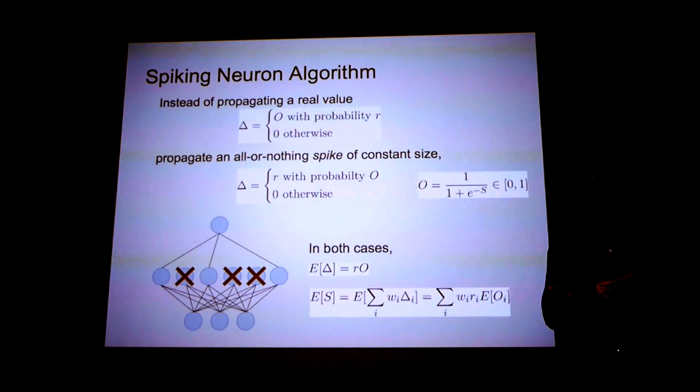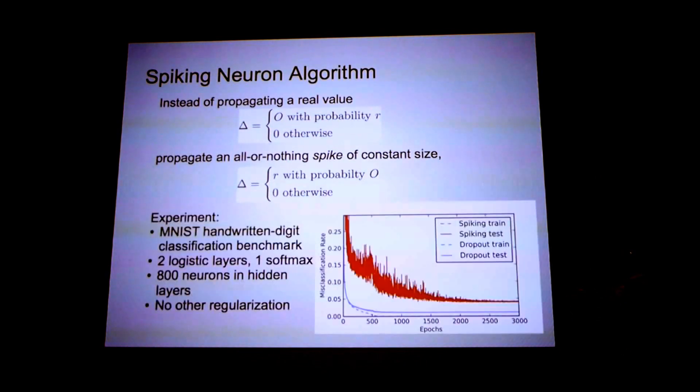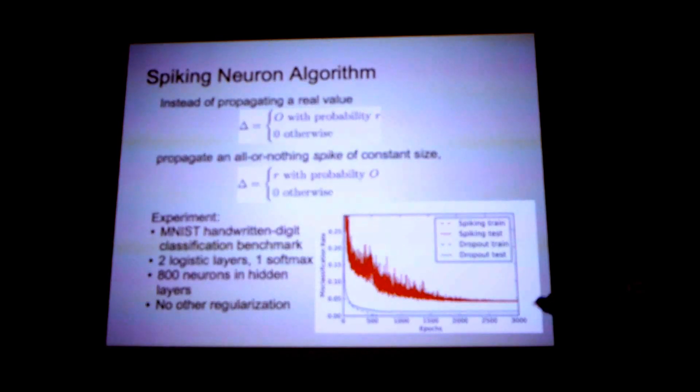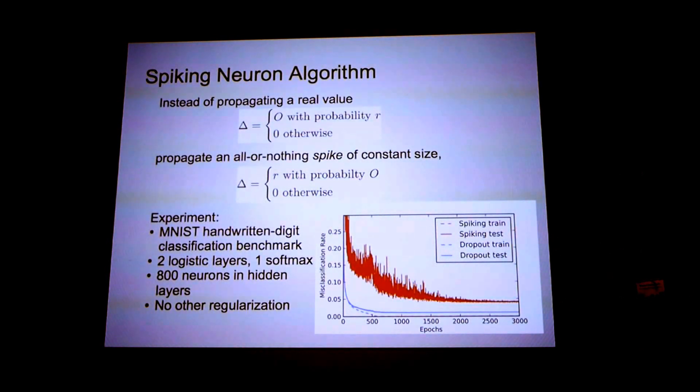So we implemented this and here I'm replicating the dropout results from the original dropout paper. And I'm comparing it to this spiking neuron algorithm. And we can see that the spiking neuron algorithm doesn't converge as quickly, but it does train a multilayer neural network. And this is pretty surprising because the spiking neuron restriction is kind of a big constraint. So this is the first variant.